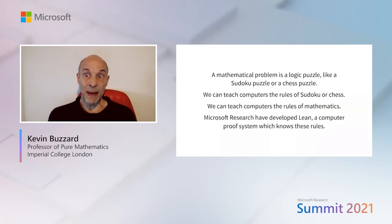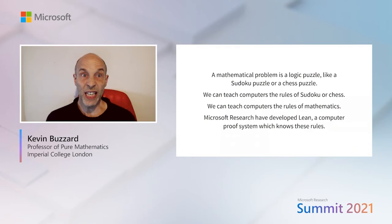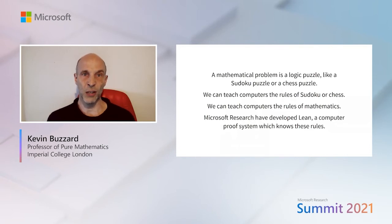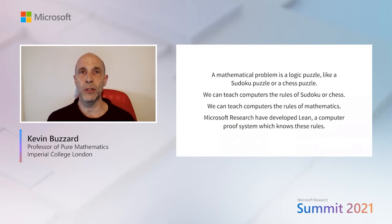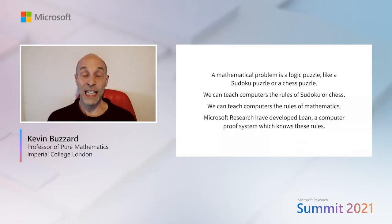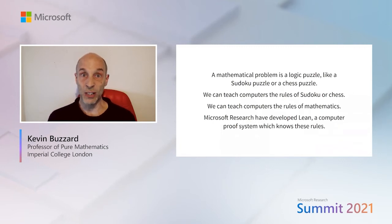A mathematical problem is just a logic puzzle, like a Sudoku puzzle or a chess puzzle. We can teach computers the rules of Sudoku or chess, and similarly we can teach computers the rules of mathematics. Computers can solve Sudoku problems in a fraction of a second, and computers can now beat chess grandmasters at chess. The Lean theorem prover, written by Microsoft Research, is exactly that — a computer proof system which knows the rules of mathematics. This is the very beginning of the adventure as far as mathematicians are concerned.